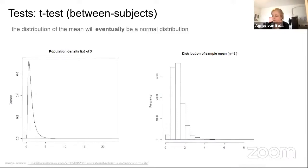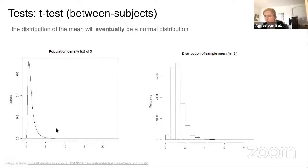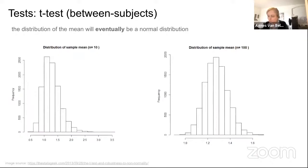However, the keyword is 'eventually' because it depends on the shape of your distribution. Screenshots from a blog post (linked below) show a clearly skewed distribution: with 10,000 samples of size 3 the means are still not very normally distributed; with sample size 10 it's a bit more normal but not extremely so; only at sample size 100 does the mean actually look normally distributed.